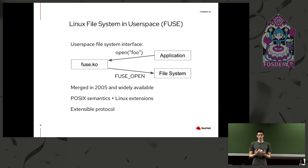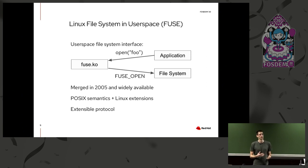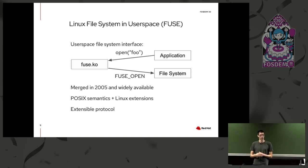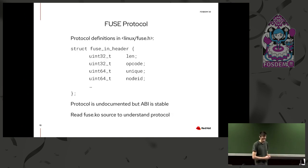One of the nice things about Fuse, and a key reason we chose it for VirtaFS, is that it's very closely associated with what native Linux file systems can do, since it's a Linux kernel module. It's not just POSIX — it has the full vocabulary needed for application compatibility, including Linux extensions like copy offloading. And it's extensible — a protocol you can add new features to.